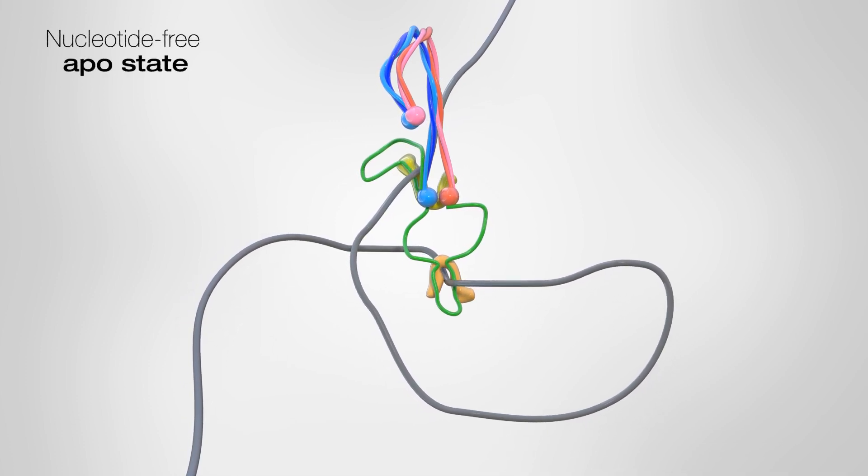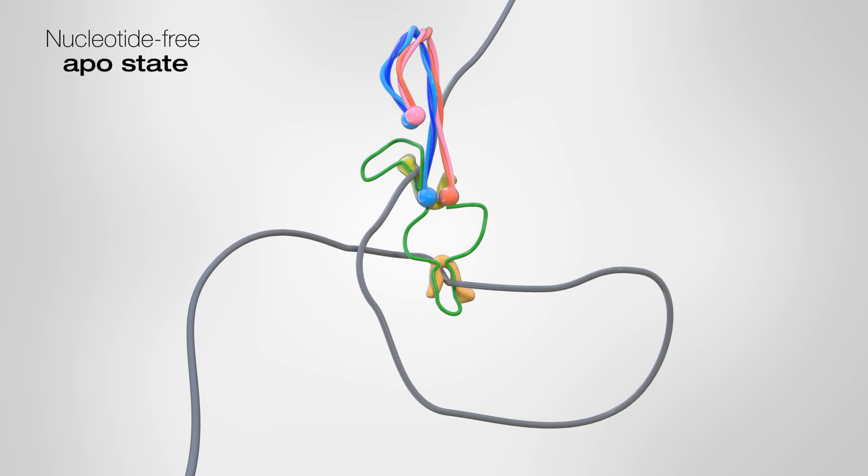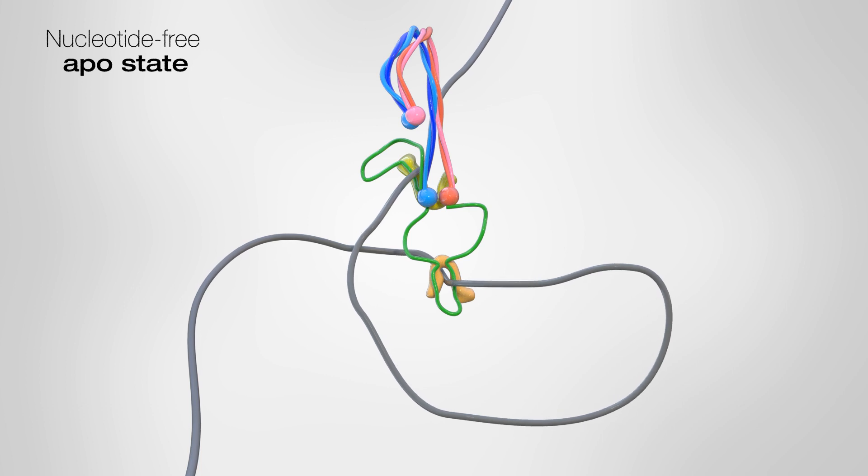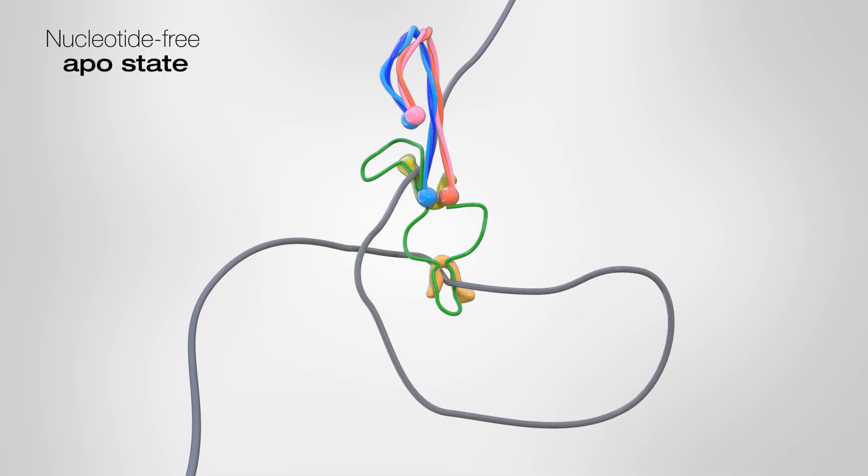By simply repeating this cycle, the condensin machine can enlarge this loop to tens of kilobase pairs in length, and thousands of condensins working in parallel fold up an entire chromosome into an array of loops to form the mitotic chromosome during cell division.